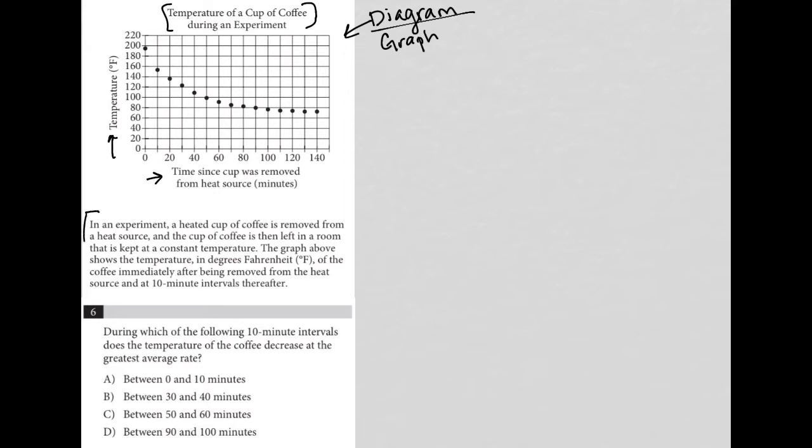So the information provided here says in an experiment, a heated cup of coffee is removed from a heat source and the cup of coffee is then left in a room that is kept at a constant temperature. The graph above shows the temperature in degrees Fahrenheit of the coffee immediately after being removed from the heat source and at 10 minute intervals thereafter.